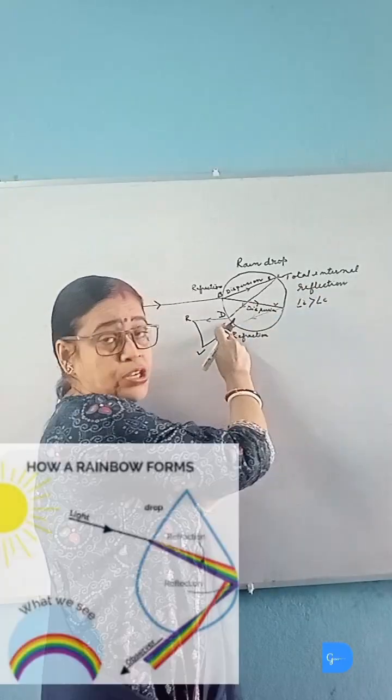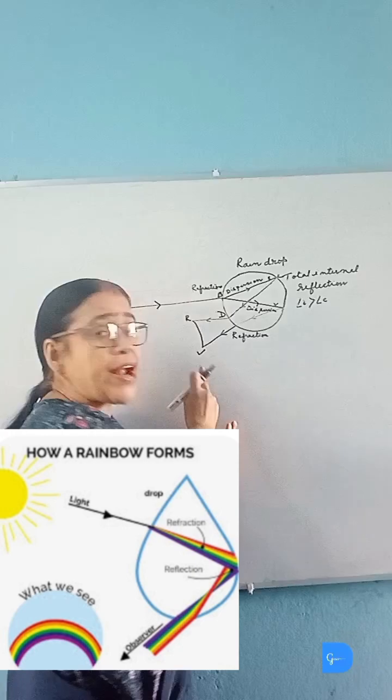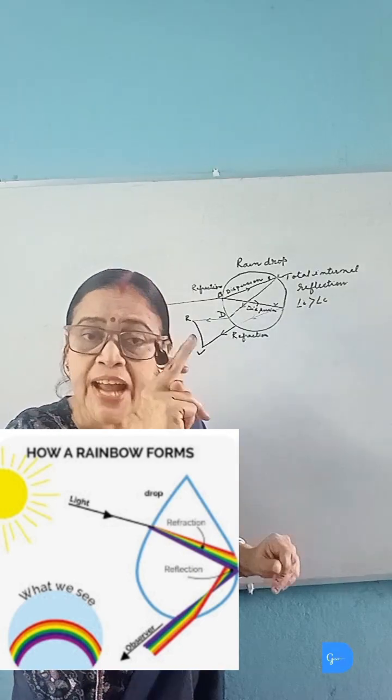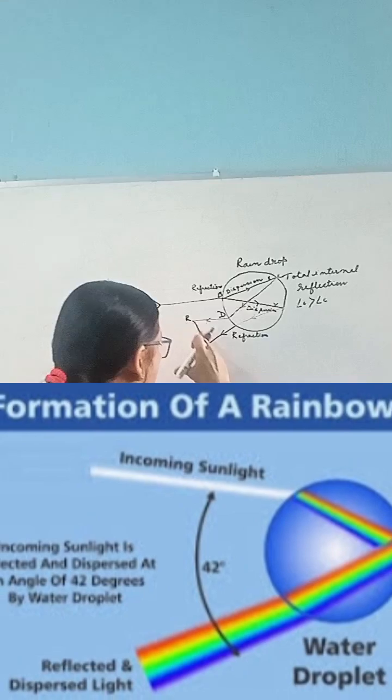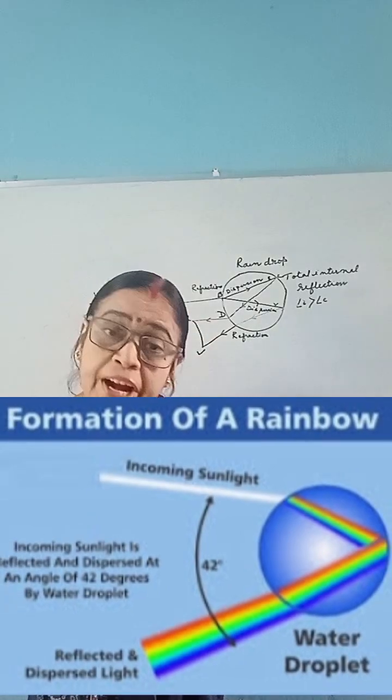Here again it undergoes refraction and emerges as a band of seven colors with red at the top and violet at the bottom. Thus, an arc of seven colors is formed which is called rainbow.